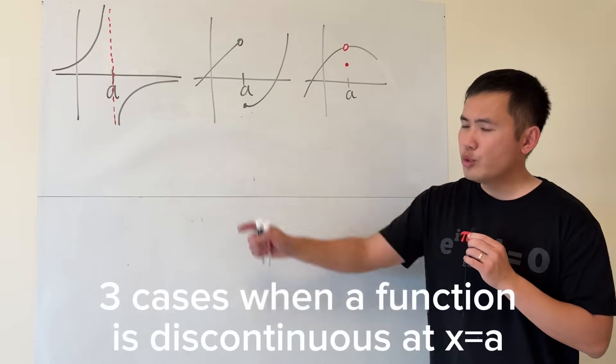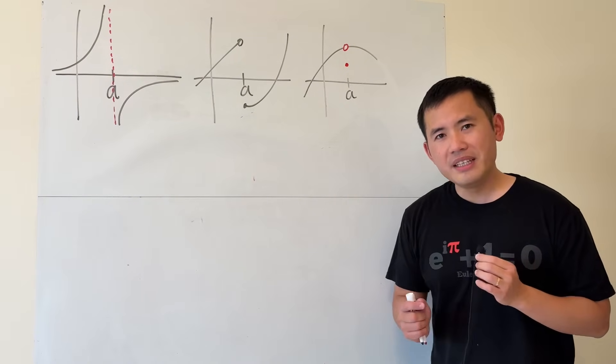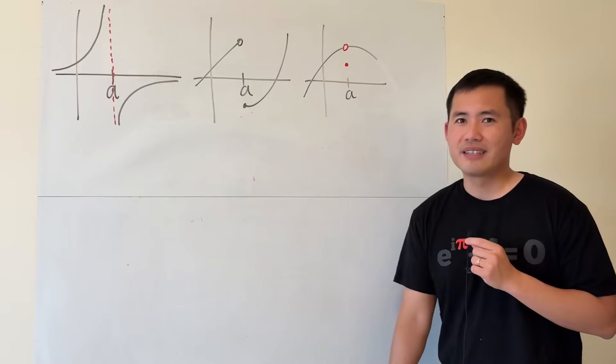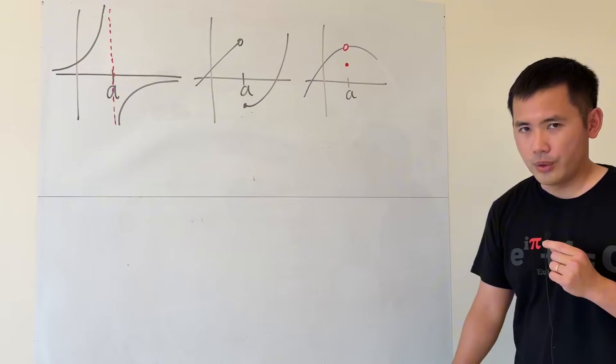So, these are the three usual cases of a function being discontinuous. But recently, I thought about another one, but I don't know about the answer, so I would like to discuss that with you guys. But before we do that, let's talk about these three real quick.